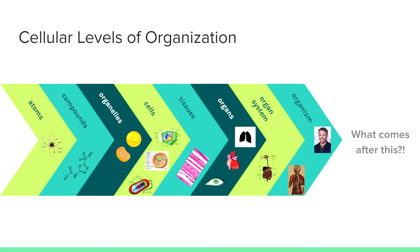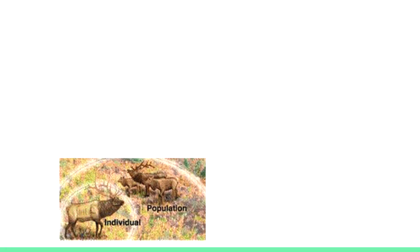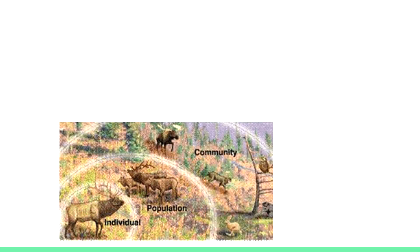But wait — what comes after this? Let's take this individual here, an elk, as our organism. When this elk is around its family — a gang of elk, yes, a group of elk is called a gang — they make up a population. This population shares its space with other organisms like a herd of moose, a pride of cougars, a drove of hares, a parliament of owls, a colony of beavers, and a grove of pine trees. These organisms make up a community.